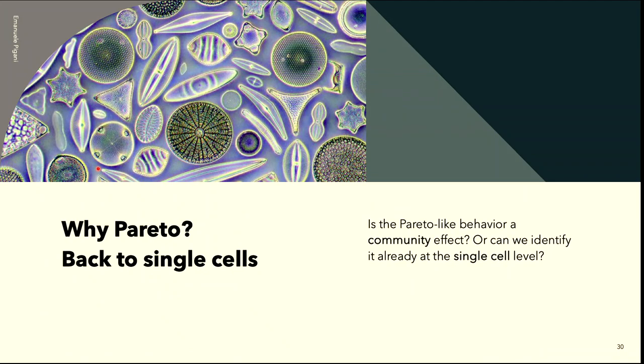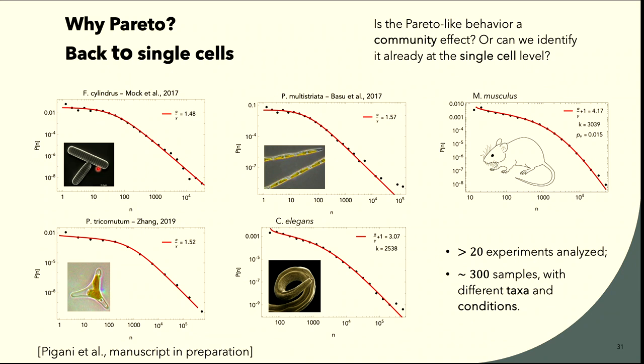The most puzzling question for us is why we observe this distribution, or at least why we observe two power-law regimes. The first thing one can think is that since we are observing a metacommunity, the double slopes are just the result of dealing with such a complex system. But eventually we analyzed more than 300 samples of single-cell data, and we found that these double slopes are present everywhere — not just in diatoms, but also in other species. We consistently found that a simple power law is not the law that describes the data. Our intuition is that the mechanism shaping this distribution is already present at the single-cell level, not just a result of community-level effects.